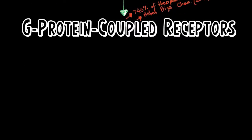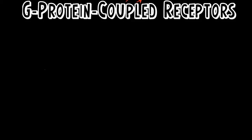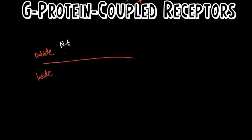Let's start with the structure of G-protein-coupled receptors. If this is the cell membrane, and this is the outside of the cell, and this is the inside, a GPCR starts on the outside of the cell with the N-terminal. And if there is one thing you get from watching this video, I want it to be this: a G-protein-coupled receptor crosses the cell membrane seven times.